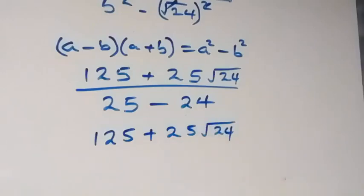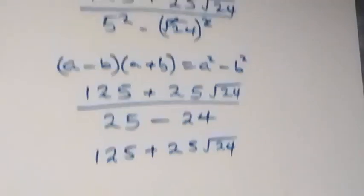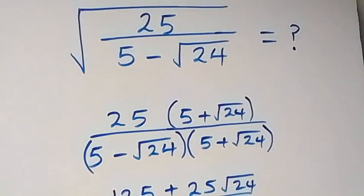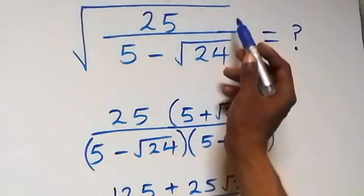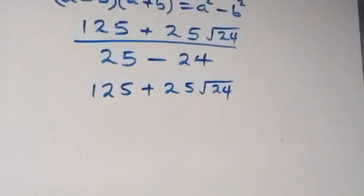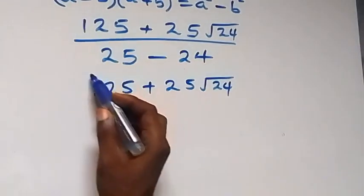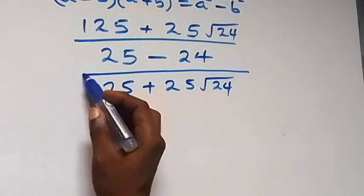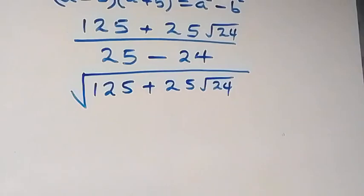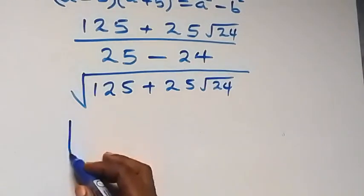Since what we had originally was under a square root, we now introduce the square root back. So we have the square root of 125 plus 25 root 24.